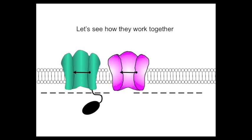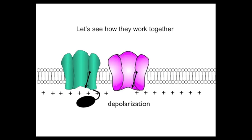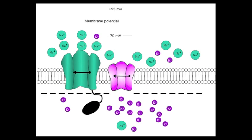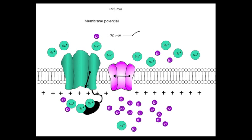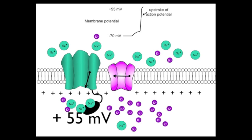So let's see how they work together. First, depolarization opens the activation gate on the sodium channel, and then a moment later the potassium channel. We want to look at the flow of ions through these channels as they open and close, and how that affects the membrane potential, which is plotted at the top. We first depolarize the membrane, and the activation gates on the sodium channels open, bringing in an influx of sodium that drives the membrane potential to plus 55 millivolts — that is the upstroke of the action potential.